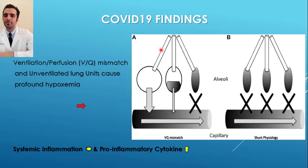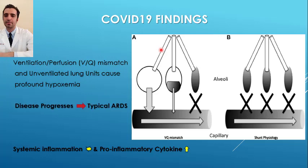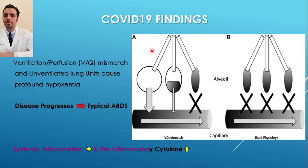As the disease progresses, these changes can cause inability to perform gas exchange, often resembling typical ARDS. Additionally, acute lung injury, systemic inflammation, and increased inflammatory cytokine expression lead to cytokine storm at the end stage of disease.